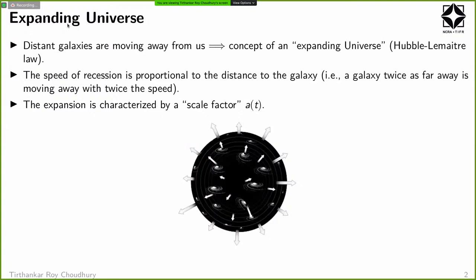Modern cosmology as we know started probably a hundred years back, essentially from the fact that we realized there are galaxies beyond ours, and these distant galaxies are moving away from us. This led to the concept of an expanding universe, now known as the Hubble-Lemaître Law. The recession speed is exactly proportional to the distance to the galaxy.